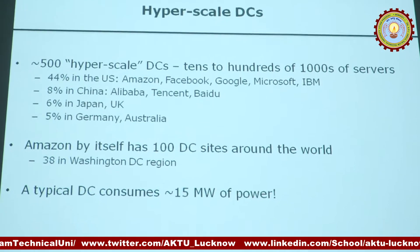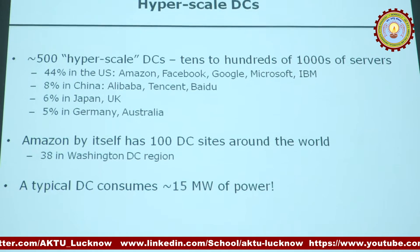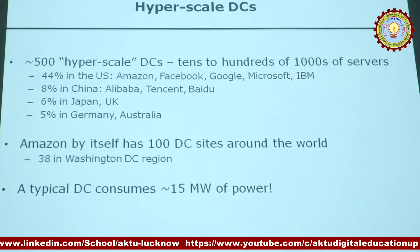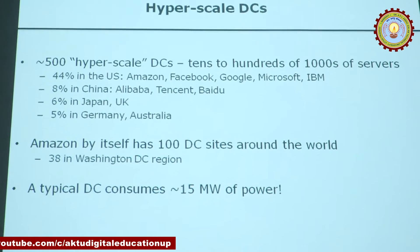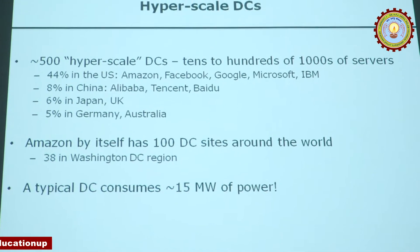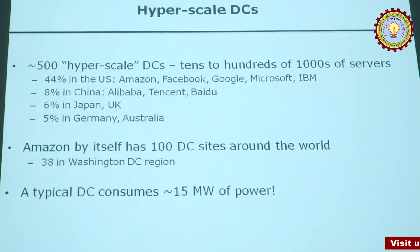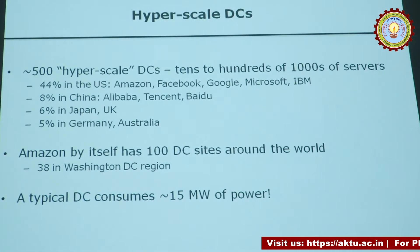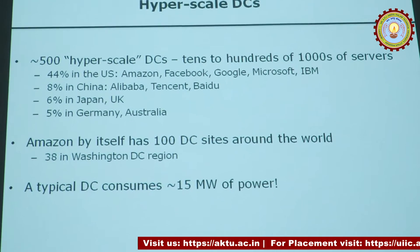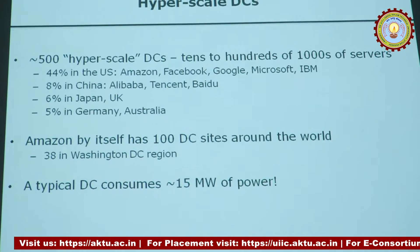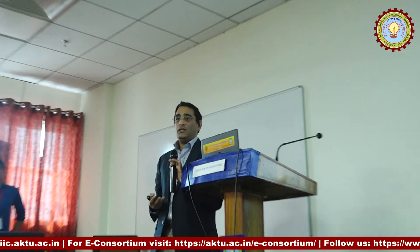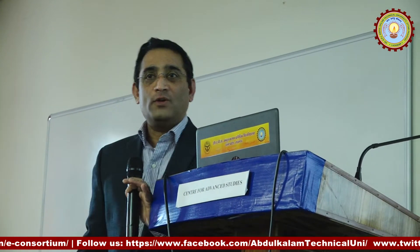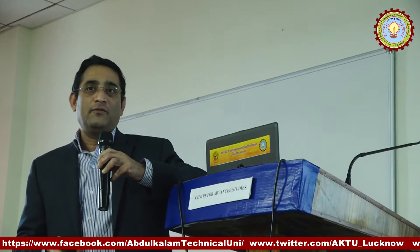Amazon is probably the world's biggest data center operator, with about 100 data center sites around the world; about 38 are in the Washington D.C. region near Dulles Airport — very large buildings that generate their own electricity for power and cooling. A typical data center consumes about 15 megawatts of power, and the biggest ones consume much more. Just the cooling alone takes a lot of power.